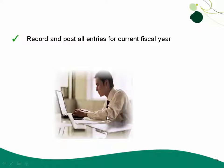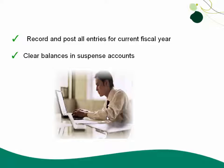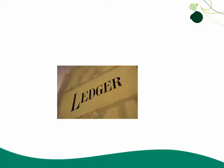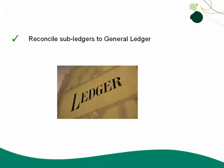To do this, you need to verify that you've recorded and posted all entries for the current fiscal year in all modules. You need to clear balances in suspense accounts. You need to verify all subsidiary modules and entries have been updated and reconcile those sub-ledgers to the general ledger.